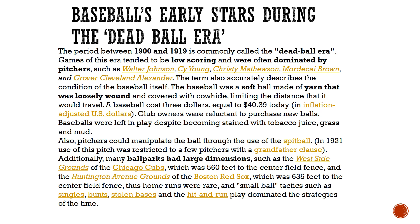The term dead ball also accurately describes the condition of the baseball itself. The ball was basically softer than it is today. It was made of yarn that was wound loosely around the center of the ball, and that obviously limited the distance that the ball would travel. A baseball cost three dollars back then, equal to about forty dollars and thirty-nine cents today. Baseballs were very expensive, so if a ball went into the stands it was expected to be thrown back. If a ball got dirty or wet, it didn't matter — they still used the same ball.